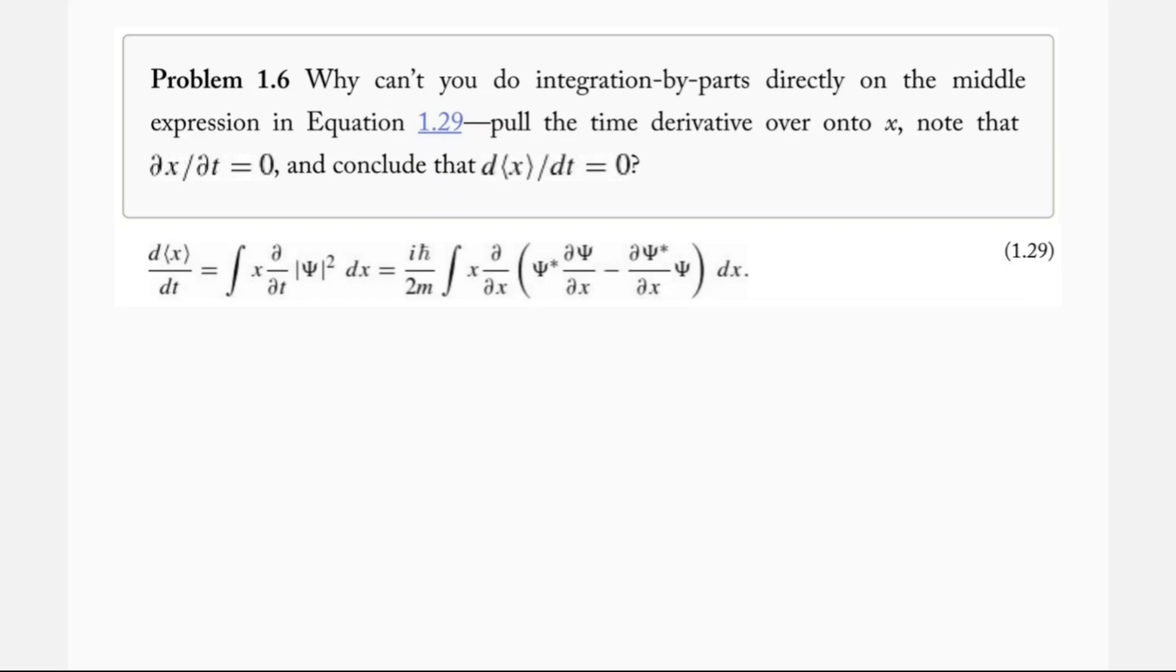By pulling out the time derivative over onto x, we then would note that the derivative with respect to t of x is equal to zero, and then we could conclude that the derivative with respect to t of the expectation value of x equals zero.